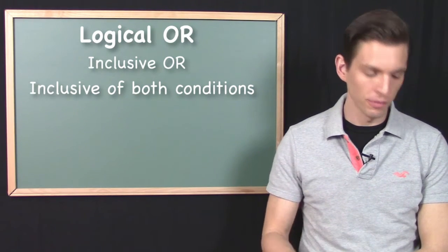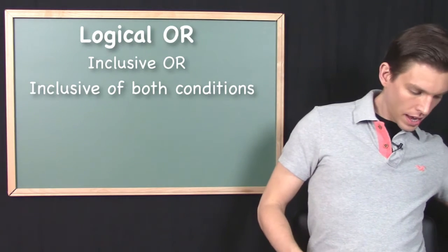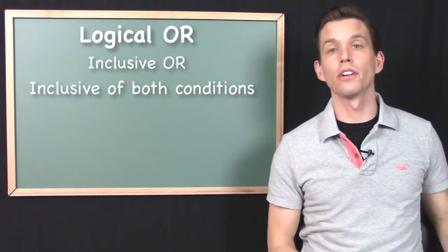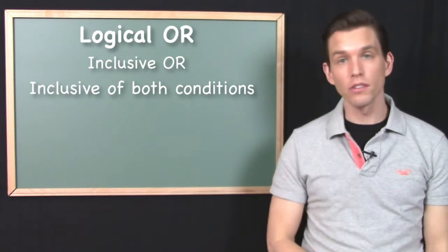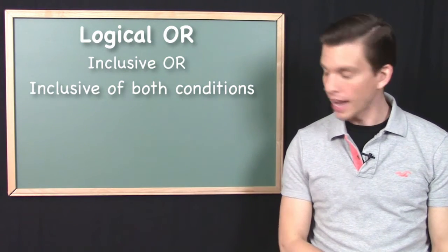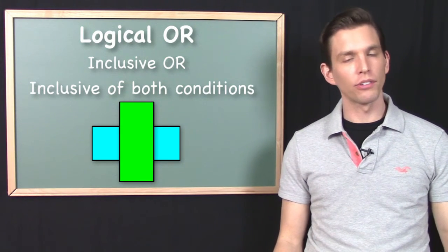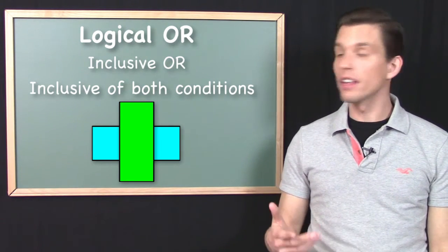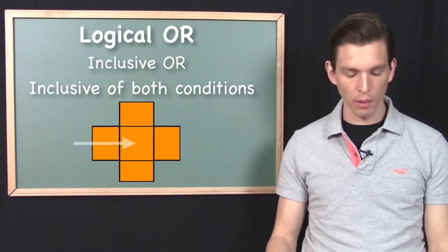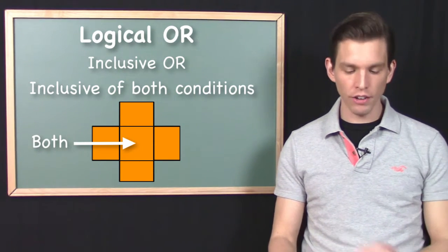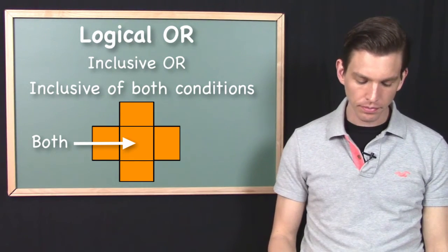The computer interprets OR as inclusive OR — inclusive of both conditions. Had I asked a computer whether I received the marker or the book, the computer wouldn't have hesitated: it would say yes, because I received both, and to a computer OR is inclusive of both conditions. That's what inclusive OR means, and that is also how it applies when talking about the union operation. When we ask for all areas that are A or B, the union returns the full combined shape — yes, the area in the middle is both A and B, but that's okay, because logical OR is inclusive of both conditions.